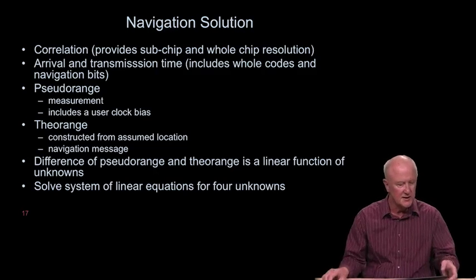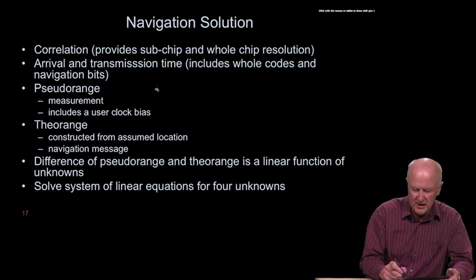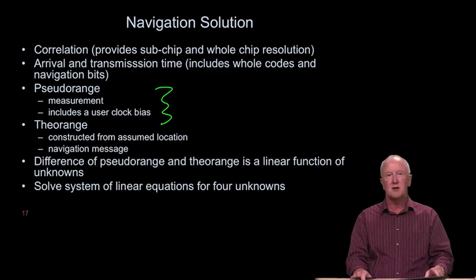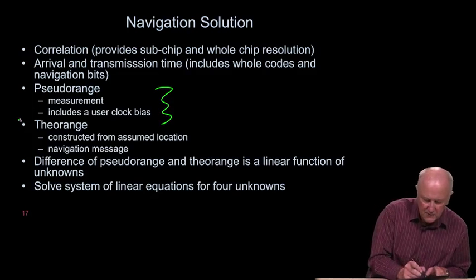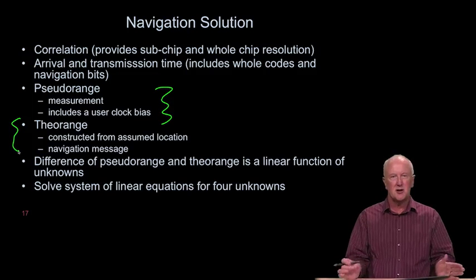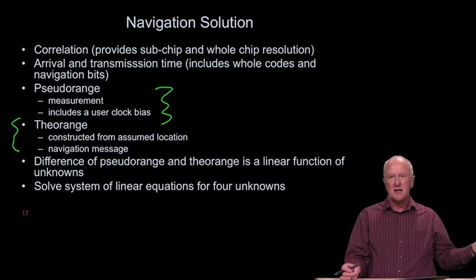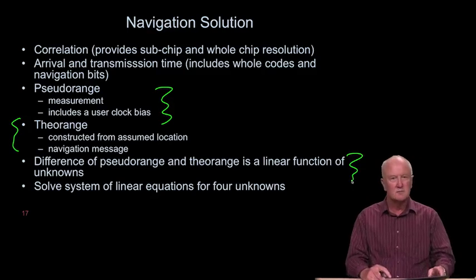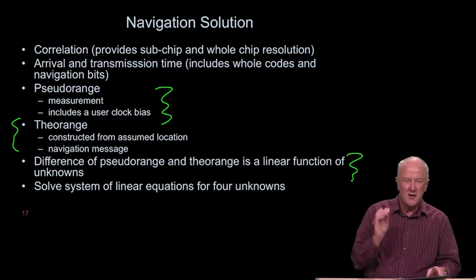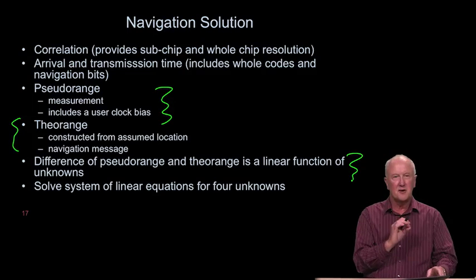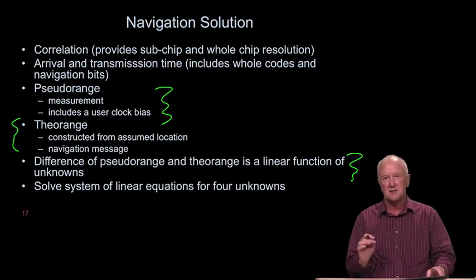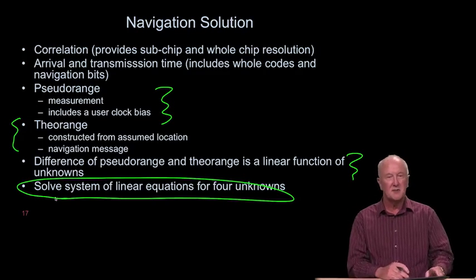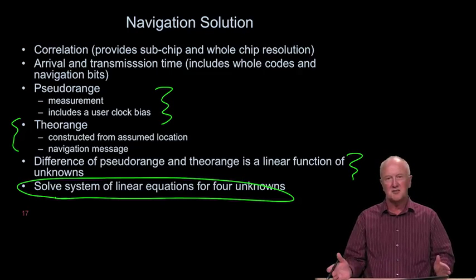So correlation is the most microscopic operation. On top of that, we have to add in for whole codes and whole navigation bits to build up the complete pseudo range measurement. The pseudo range measurement is really the subject of the last couple of snippets. It is just that. It's a measurement inclusive of the user clock bias. In parallel with that, we build the theo range. It's a construction based on the broadcast location of the satellite as well as our assumed location of the user. We take the difference between those two things. That's the residual. And based on that difference, we can convert a nonlinear set of equations into a linear set of equations. They are a function of the four unknowns. And so we go ahead and we solve at least four of those equations for the four unknowns.